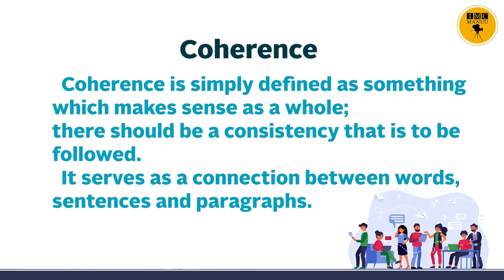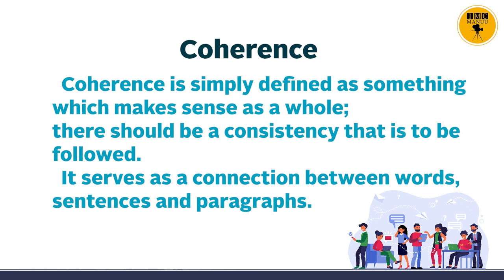The next principle of paragraph writing is coherence. Coherence is simply defined as something which makes sense as a whole. There should be a consistency that is to be followed. It serves as a connection between words, sentences, and paragraphs. If a paragraph is coherent, each sentence runs to the next without any jump or shift. A coherent paragraph shows connection between old and new information and is comprehensive to the reader.